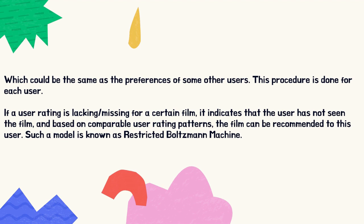This procedure is done for each user. If a user rating is missing for a certain film, it indicates that the user has not seen the film, and based on comparable user rating patterns, the film can be recommended to this user. Such a model is known as a restricted Boltzmann machine.